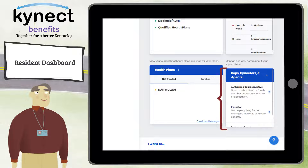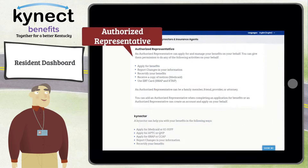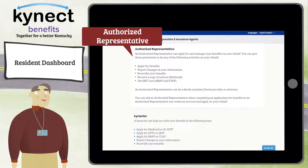The Reps, Connectors, and Agents tile connects you to your support team that can help you apply for and receive benefits. Clicking on the Reps, Connectors, and Agents tile allows you to manage and view your Authorized Representative — a family member, a family friend, or other trusted individual who can access your case or application.